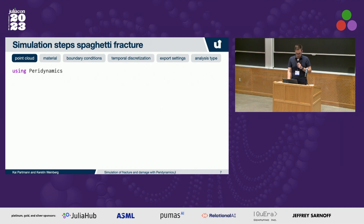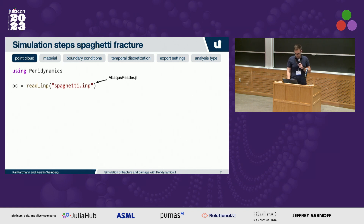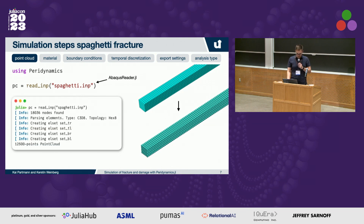First, after loading the package, we have to define the point cloud. There are a few methods to do that. The easiest method is to use the readINP function and import a finite element mesh defined in Abacus using Abacus-reader.jl. Abacus-reader.jl is used to import meshes defined in Abacus - basically, any finite element is converted to a point cloud. When you run this in the REPL, you can see the nodes are found, elements are parsed, and element sets are turned into point sets.